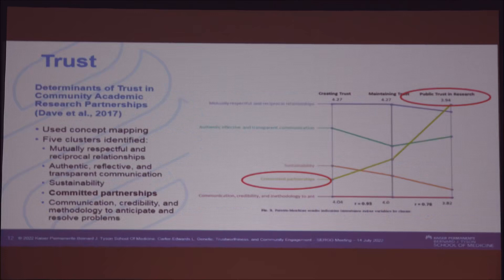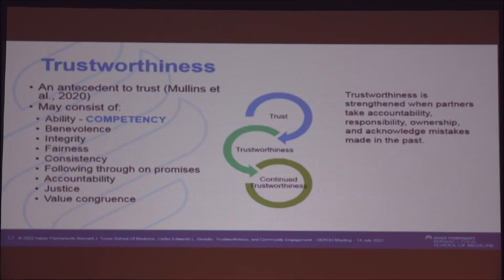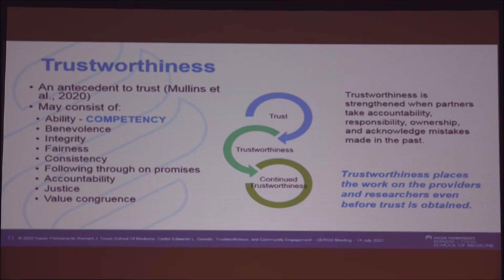If we don't have committed partnerships, we don't have public trust. While there are many determinants of trust in academic partnerships — this is from Garab Dave's paper — the key finding, circled in red, is that it's only committed partnerships that show a high level where public trust in research really matters out of all the constructs. Trustworthiness, on the other hand, is the antecedent to trust. It is the competencies we must have. We are the ones responsible — we must demonstrate we're trustworthy before we can have trust.